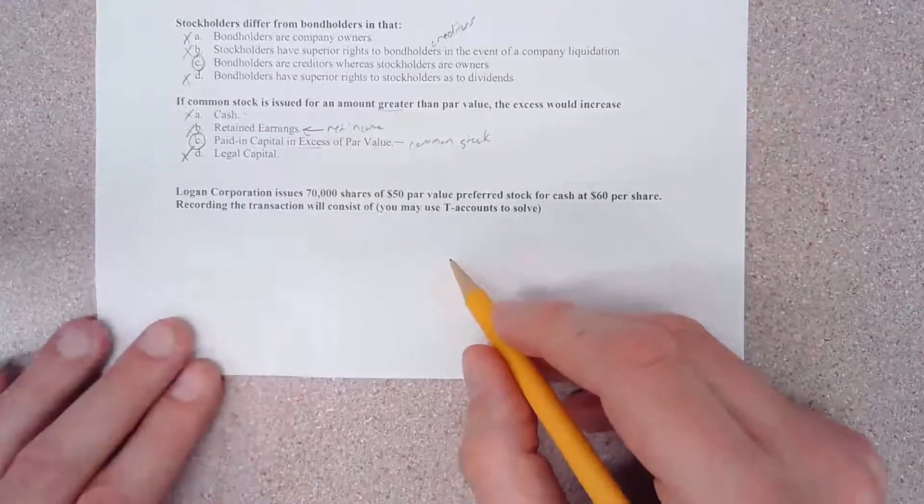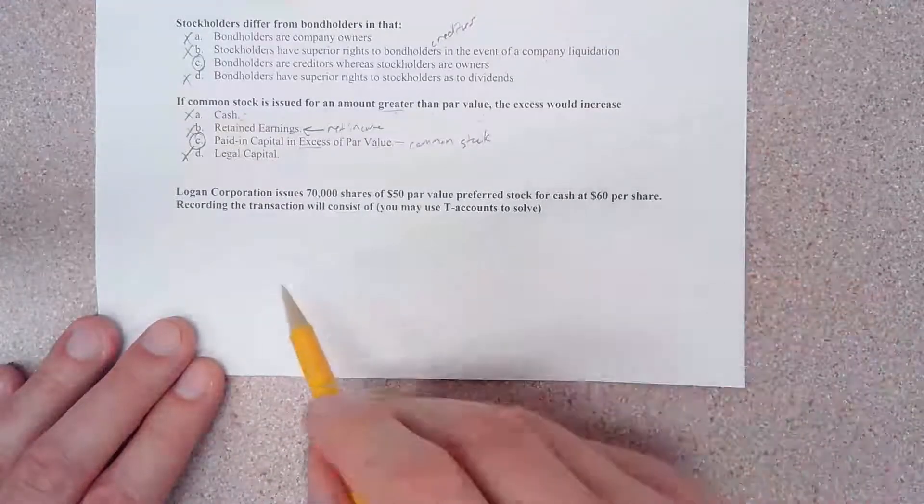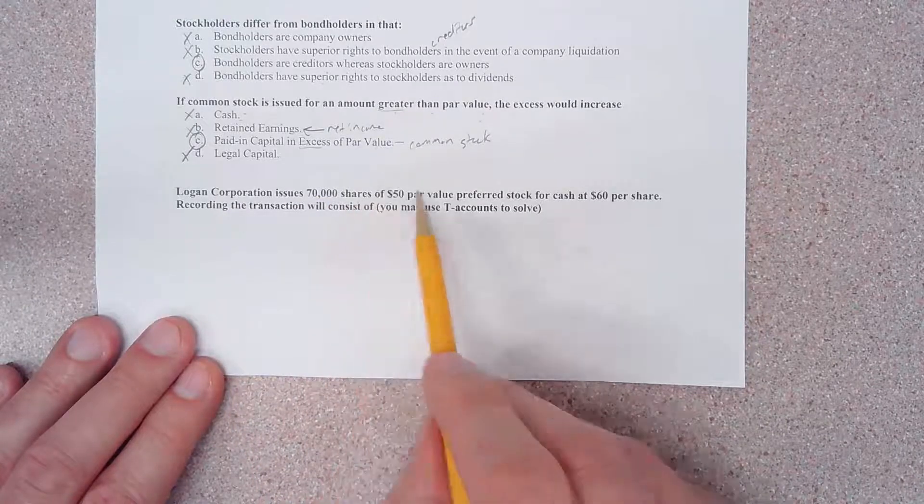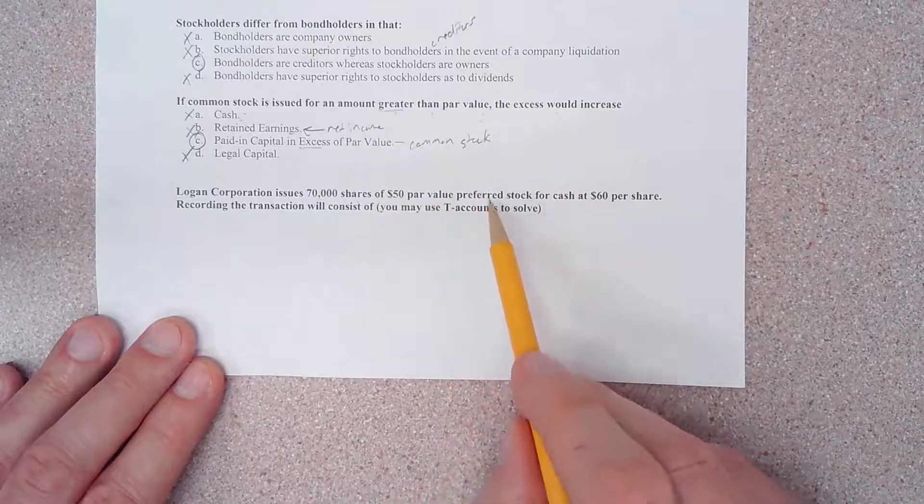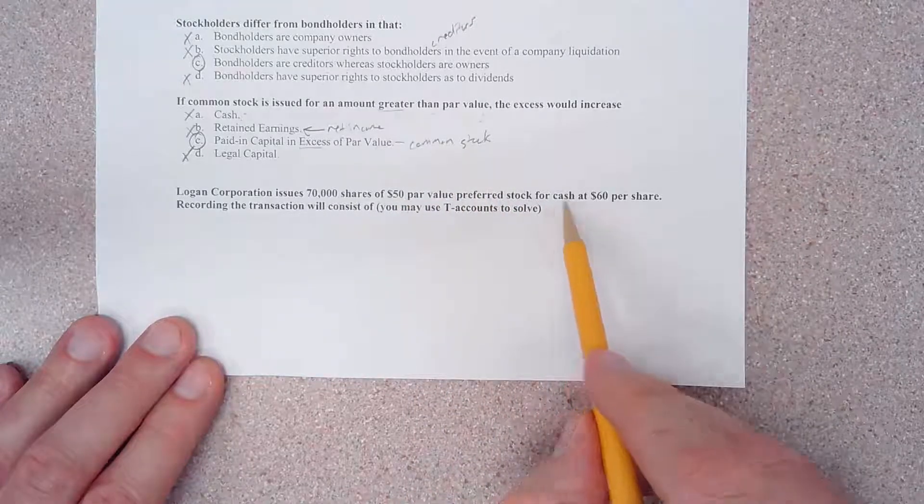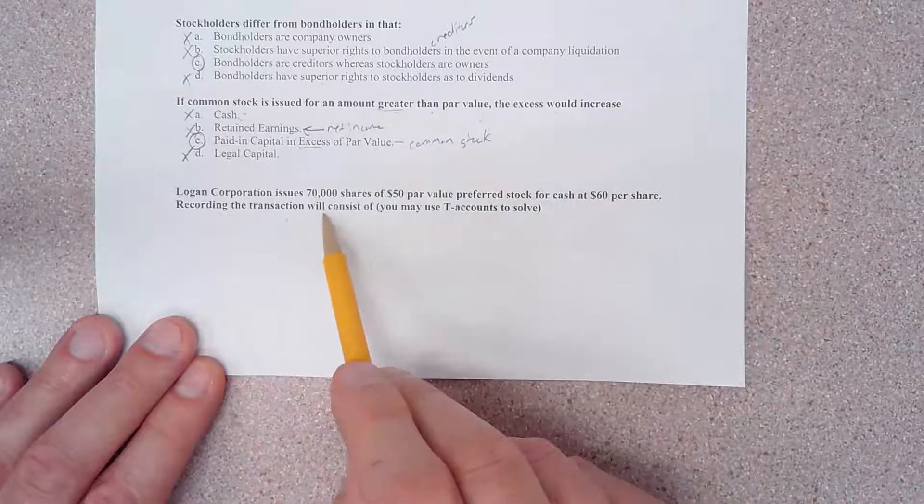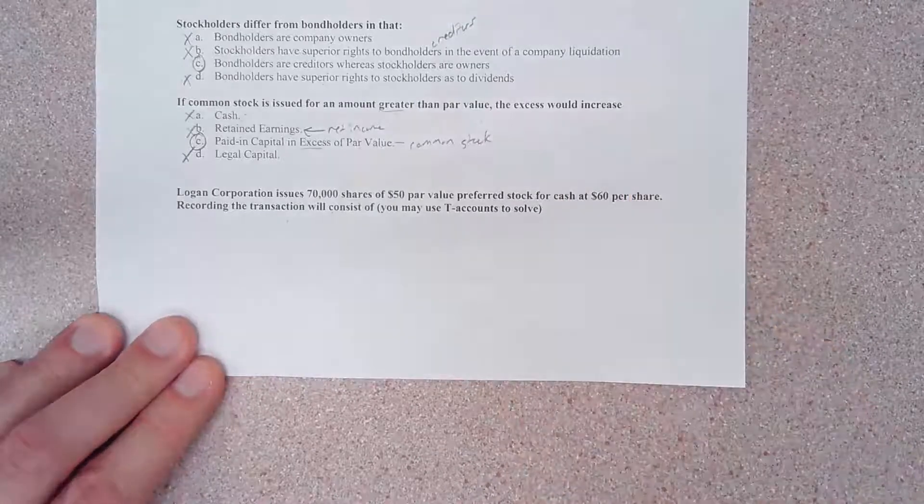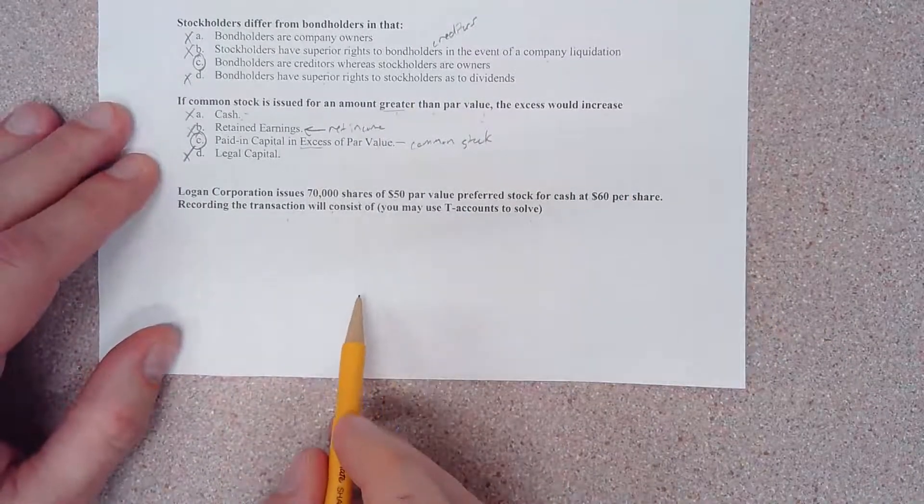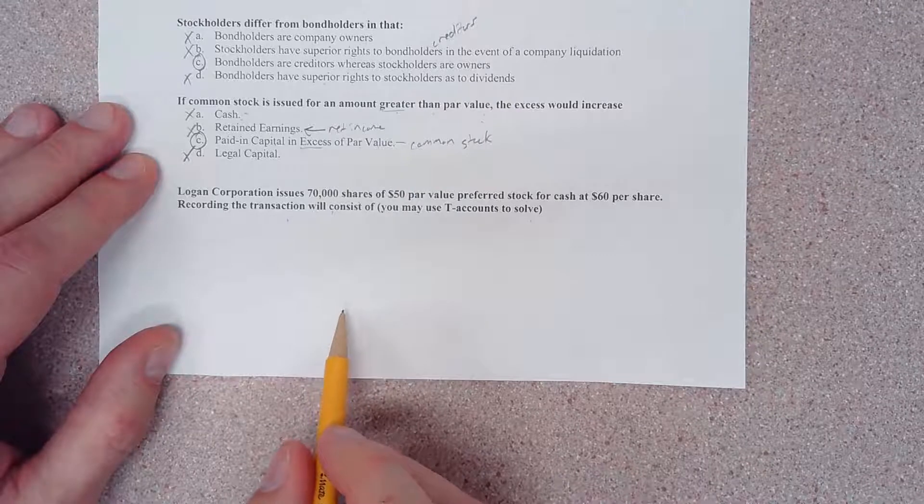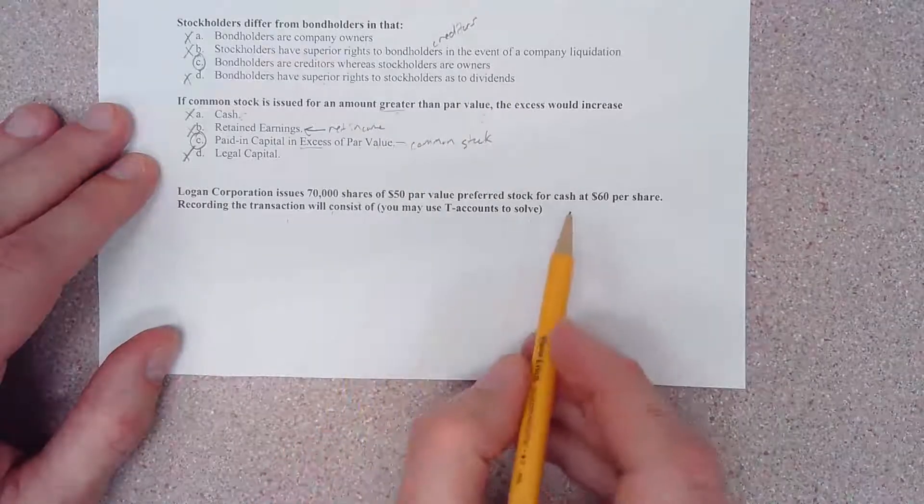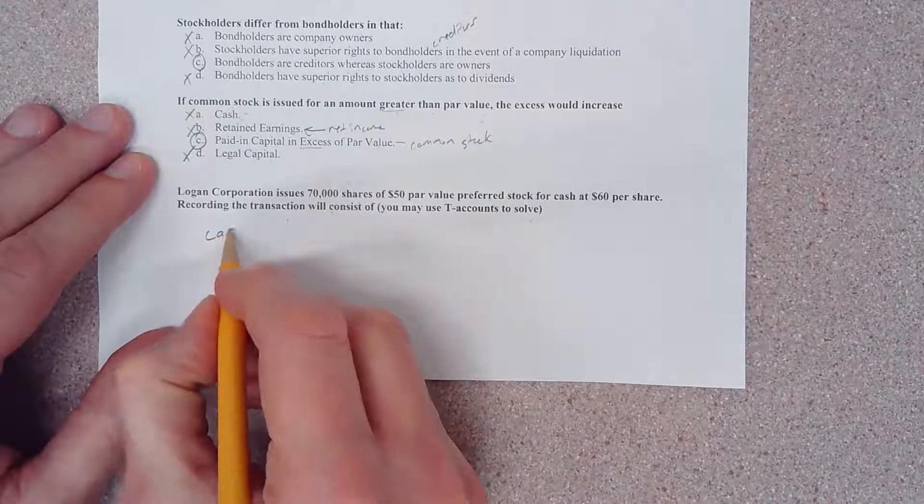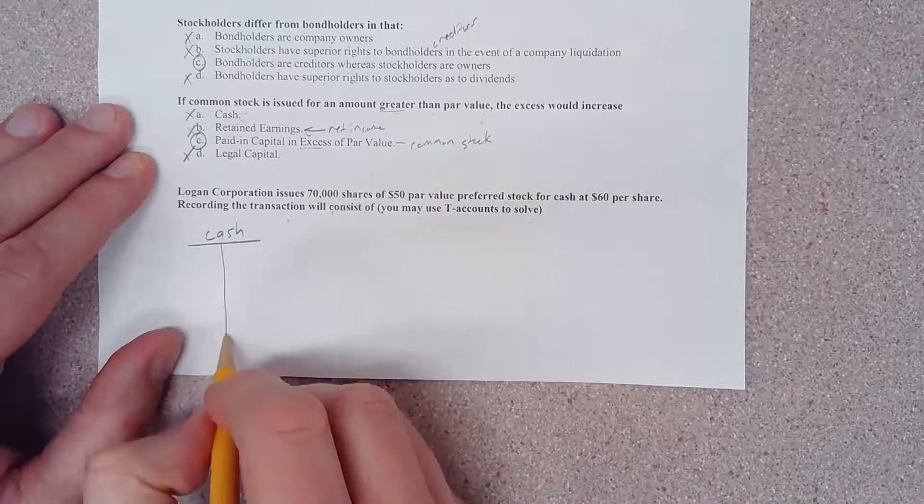Last question. It says Logan Company issues 70,000 shares of $50 par value preferred stock for cash at $60 per share. Recording the transaction will consist of - and you may use T-accounts to solve. I would recommend you do use T-accounts. So we have to determine which accounts are impacted here.